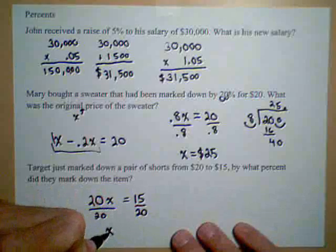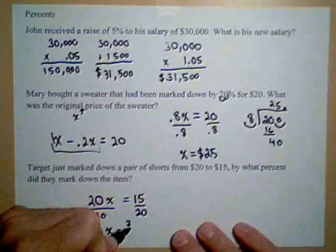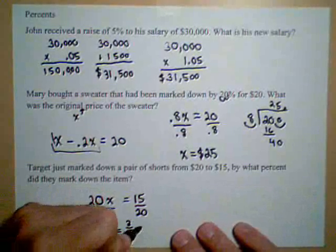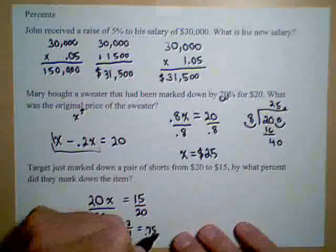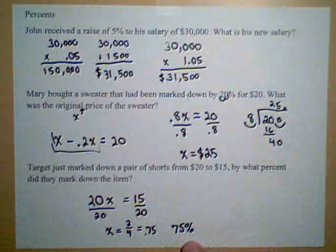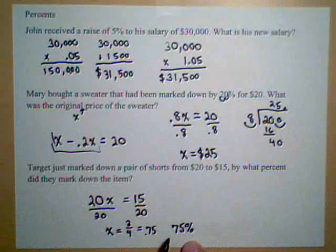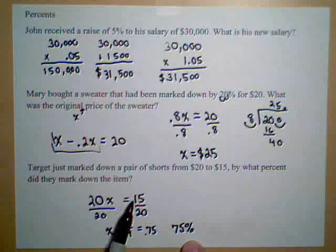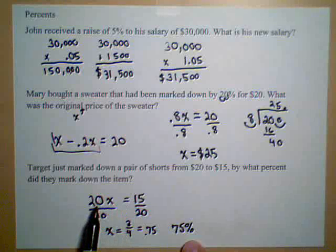And we're going to get X equals 3 fourths or 0.75, which is 75%. Now that's not the percent markdown. What this tells us is that $15 is 75% of $20.